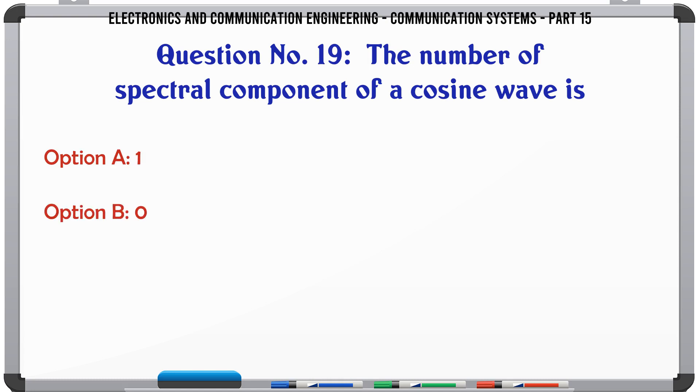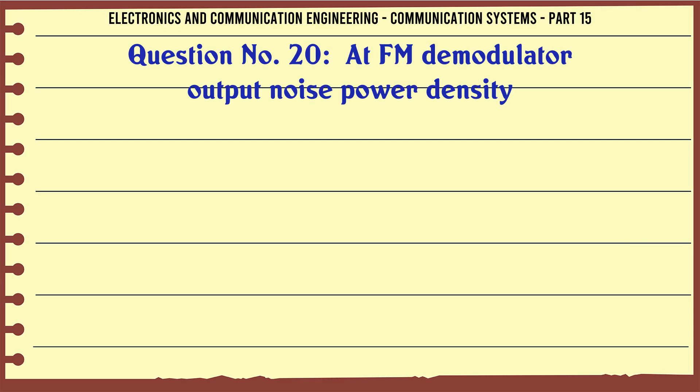The number of spectral components of a cosine wave is: A 1, B 0, C 2, D 4. The correct answer is 2.